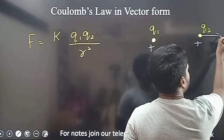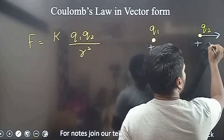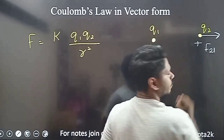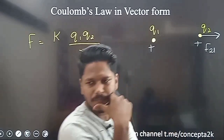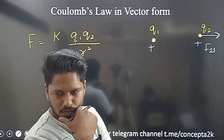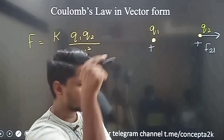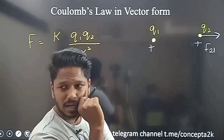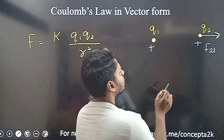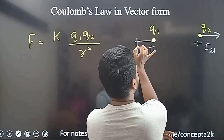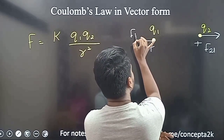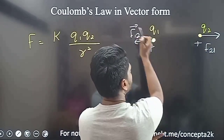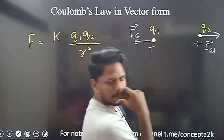Force on 2 due to 1 — the force on charge 2 due to charge 1. Next, force on 1 due to 2 — the force on charge 1 due to charge 2 is in the opposite direction. Any difficulty? No.